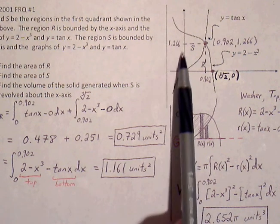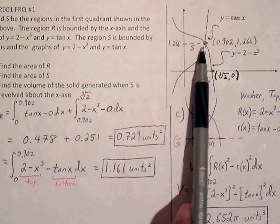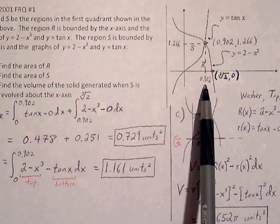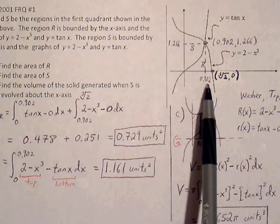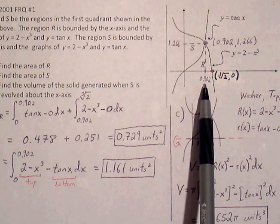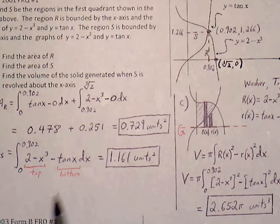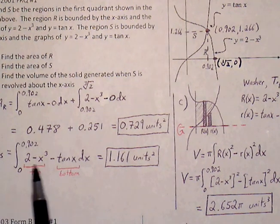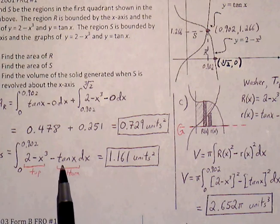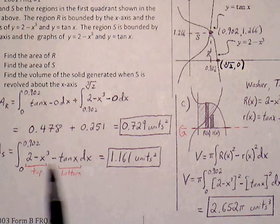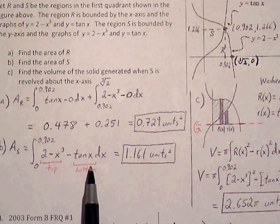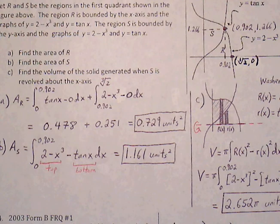The bounds will go from 0 to the furthest right the graph goes. Since we're doing top minus bottom, everything is in terms of x, so we use the same right bound as the first region of R, which is 0.902. So from 0 to 0.902, our top curve is 2 minus x cubed and our bottom curve is tangent of x. Top curve minus bottom curve — that's our formula. Plugging into the calculator, we get 1.161 square units.